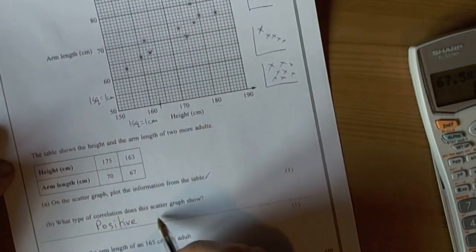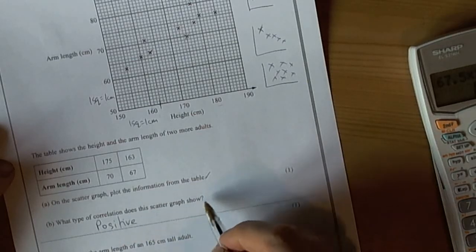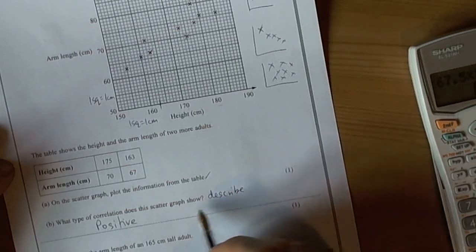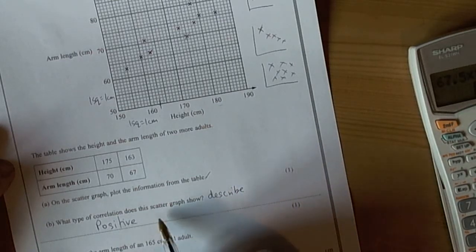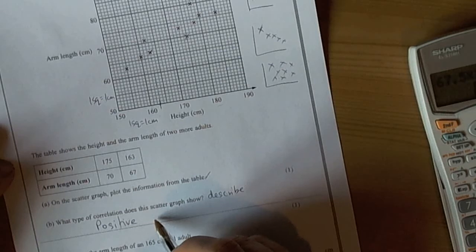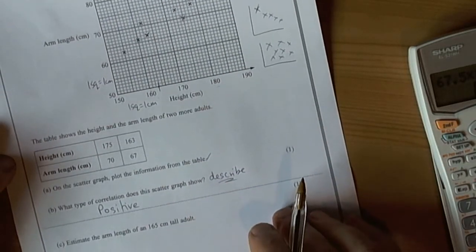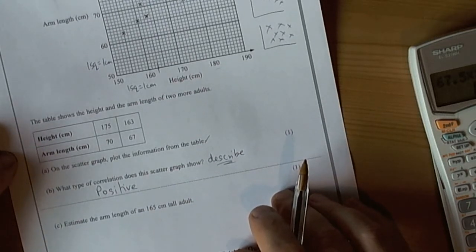As it said the word correlation there, you can just leave it as the word positive. Just be careful. If the question said describe the relationship, then as well as saying positive correlation you would then say as the height increases so does the arm length. So again just watch out for that keyword sometimes given in a scatter graph type question.